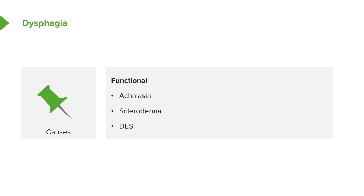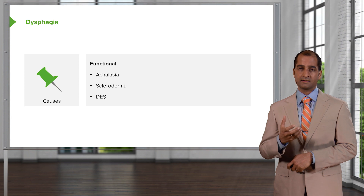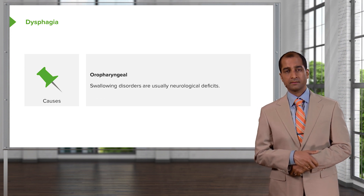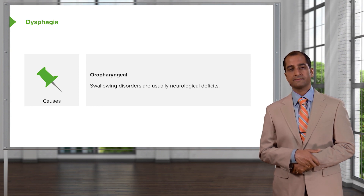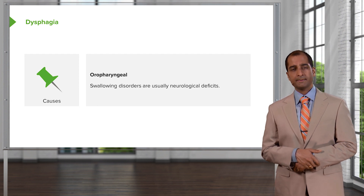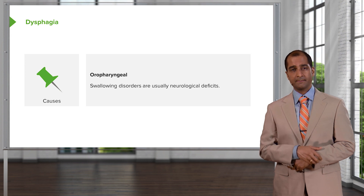Functional causes of dysphagia include achalasia — failure of relaxation of the lower esophageal sphincter — and scleroderma, which causes increased fibrosis and progressive dysphagia to both solids and liquids. Diffuse esophageal spasms occur when smooth peristaltic activity is lost, causing increased pressures and improper movement. Oropharyngeal dysphagia is usually due to neurological deficits — if the patient has lost the gag reflex, consider amyotrophic lateral sclerosis, multiple sclerosis, or diabetic neuropathy, where nerve damage makes swallowing difficult.